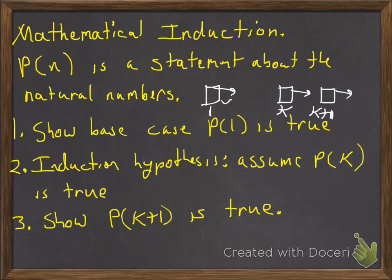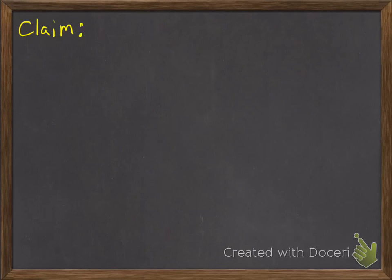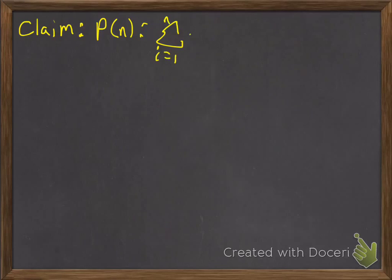We're going to show about four summation formulas that we had for doing the upper-lower sums and Riemann sums. The first claim we're going to look at — we'll call it P(n) — is that the sum from i equals 1 to n of i is going to be equal to n(n+1) over 2.